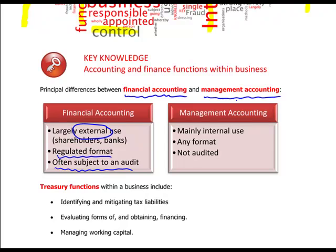Management accounting, compared to financial accounting, is mainly for internal use — it's accounting provided for management information. Because it's provided for management, it can be in any format they like. Compared to financial accounting which is in a regulated format, management accounting can be in any format, and it's not audited. It's for internal use only.